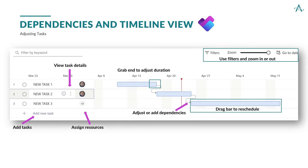The timeline lets the project manager manage task timing and ownership. Drag tasks to reschedule, resize to adjust the duration, and link them to set dependencies. The red line shows today's date, and team assignments are shown right next to each task.